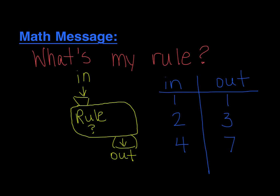You can see the numbers here in blue where we've put in one and we've got one out. We put in two, we get three out, and we put four in and we somehow get seven.